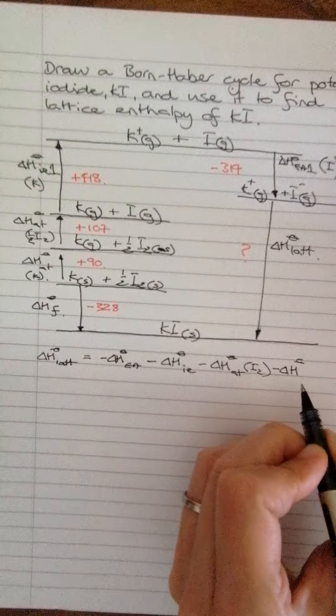Just put this on the next line. And this, we're going with the arrow, so it's plus delta H of formation. Okay. So let's go with the math.